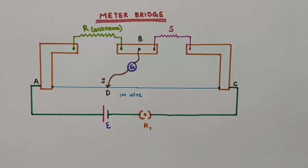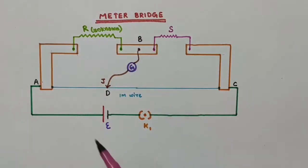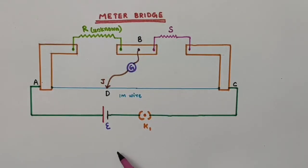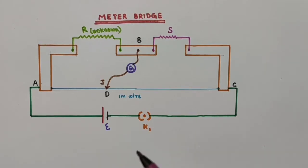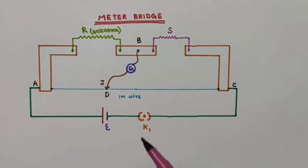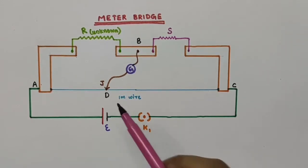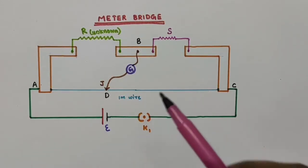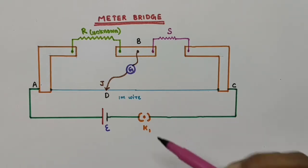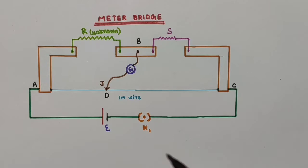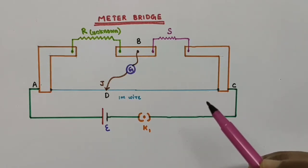Hello everyone. In this video we are going to discuss about meter bridge. While we have discussed about Wheatstone bridge, the practical way of using that Wheatstone principle is actually the meter bridge. The principle of a balanced Wheatstone bridge is R2 by R1 equal to R4 by R3. We discussed that balanced condition when we discussed about the Wheatstone bridge.